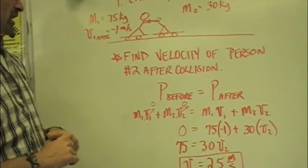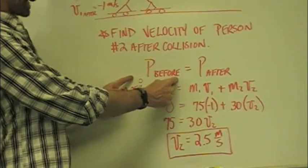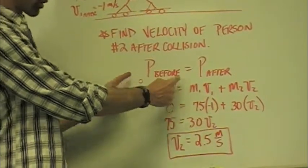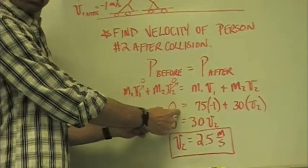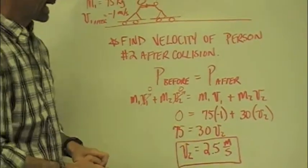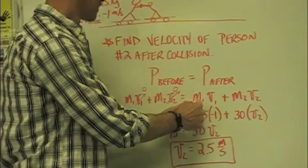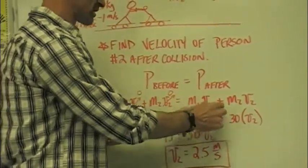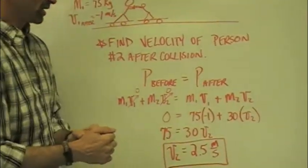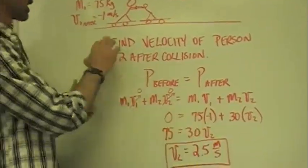So in this case, what's the momentum before? Well, we talked about that. Both the guys were going to have zero. So the total momentum before the collision is zero, right? After the collision, one of them is going to have mass and velocity. The other one is going to have mass and velocity. So we plugged in 75 times negative 1,